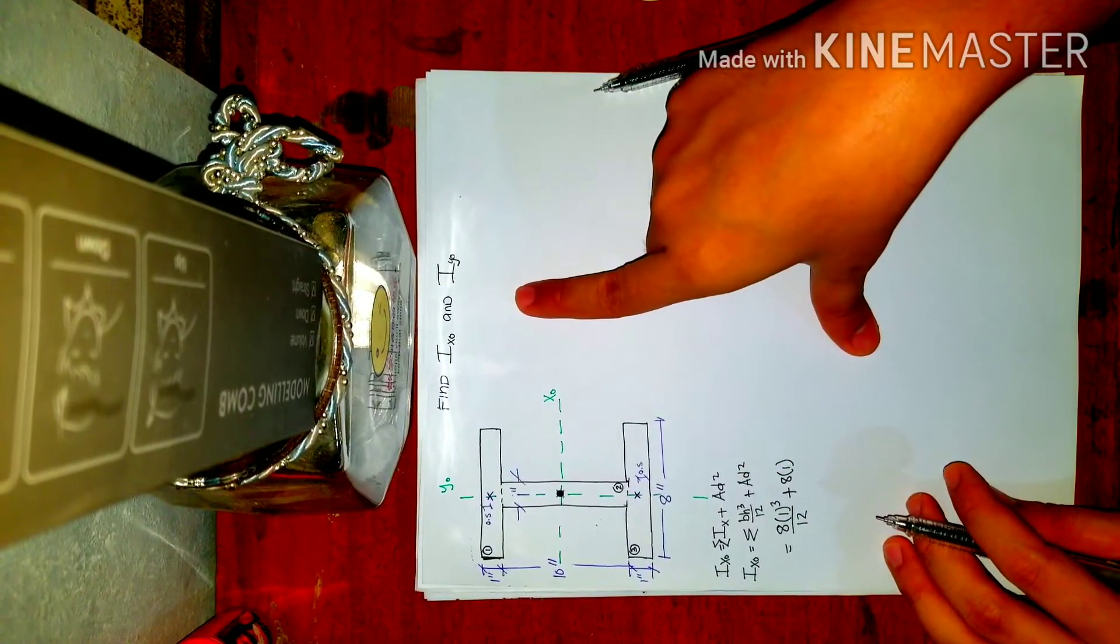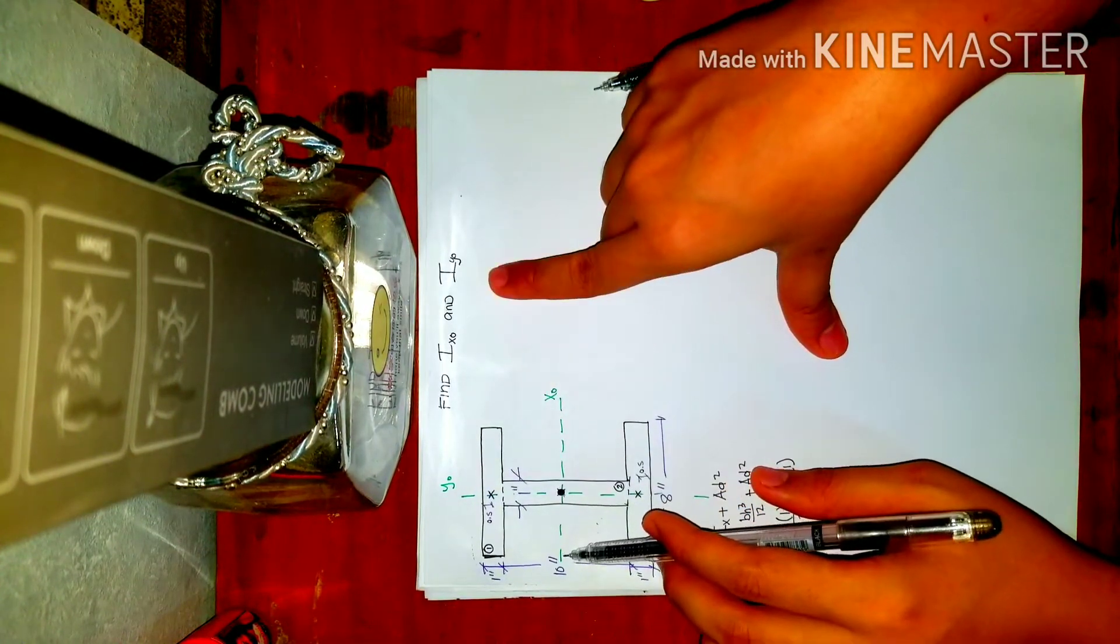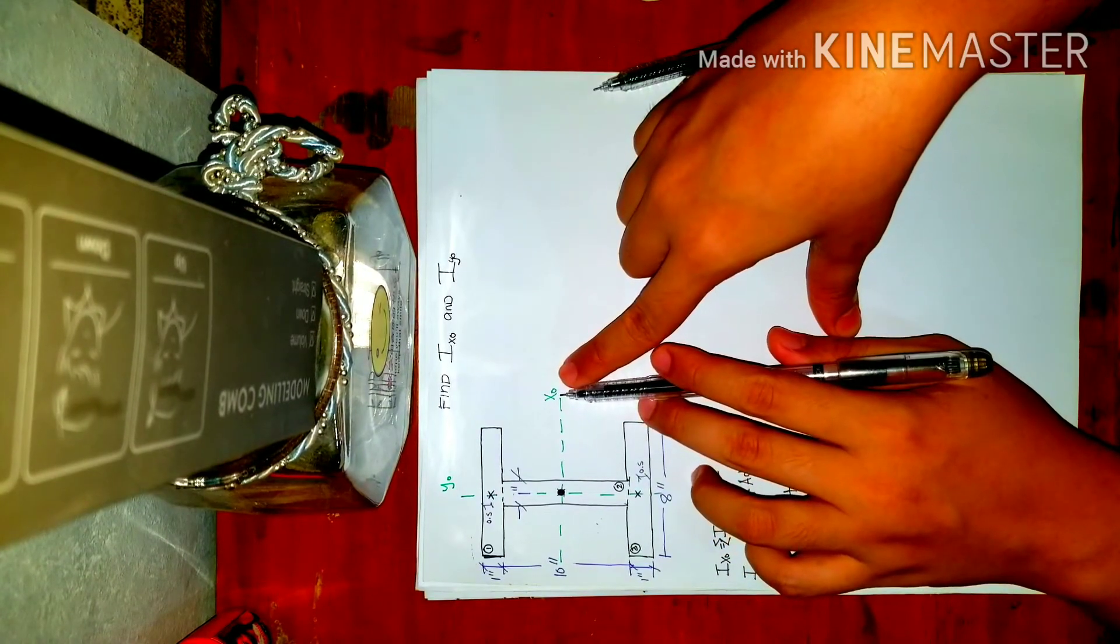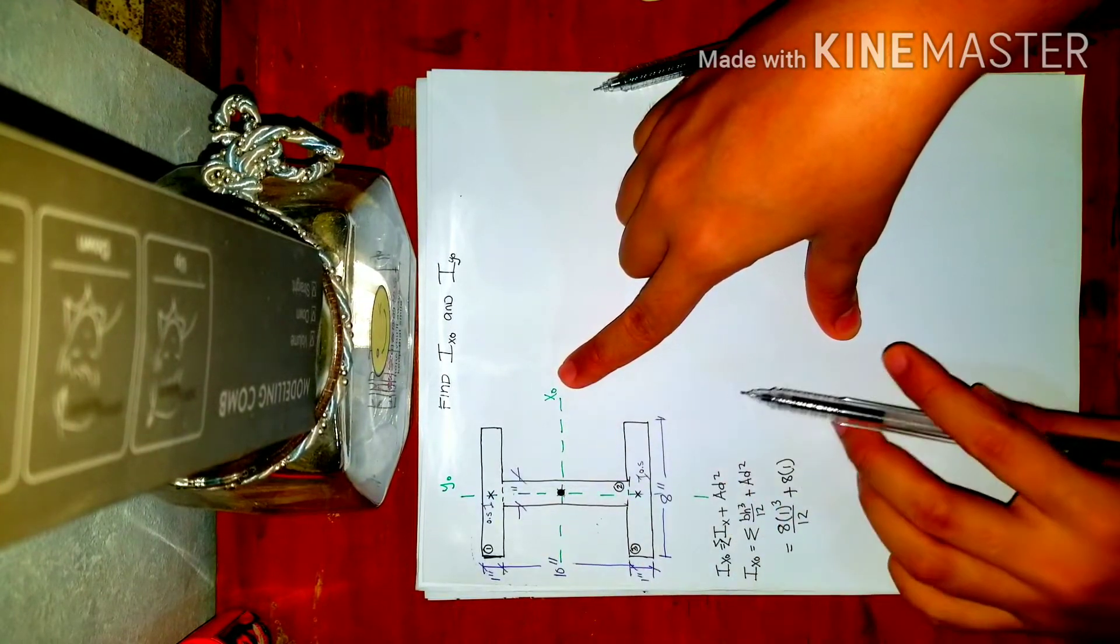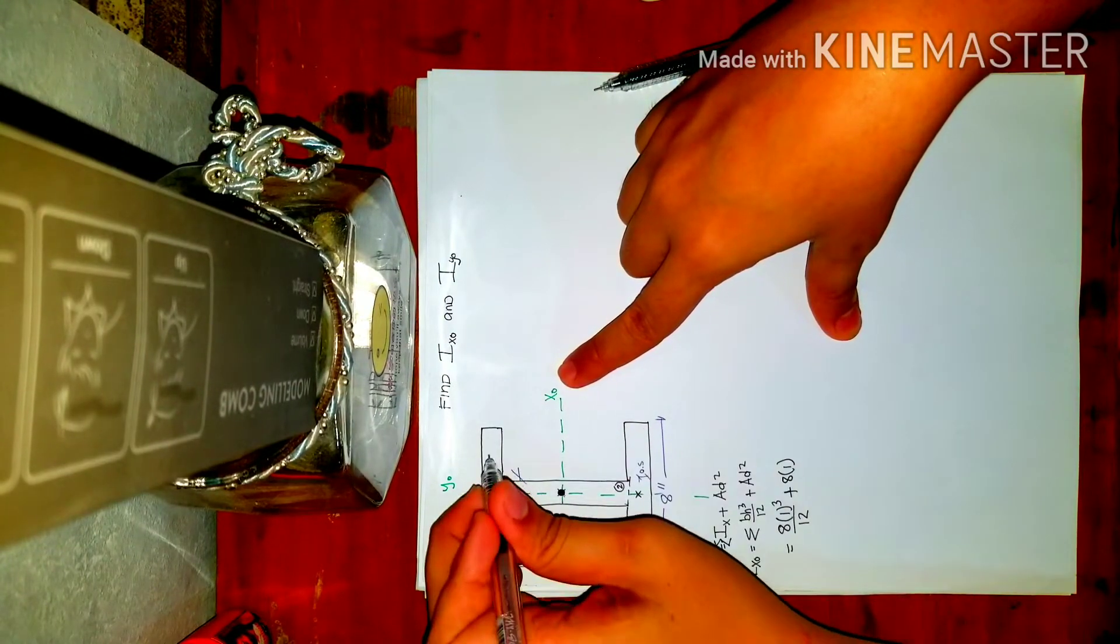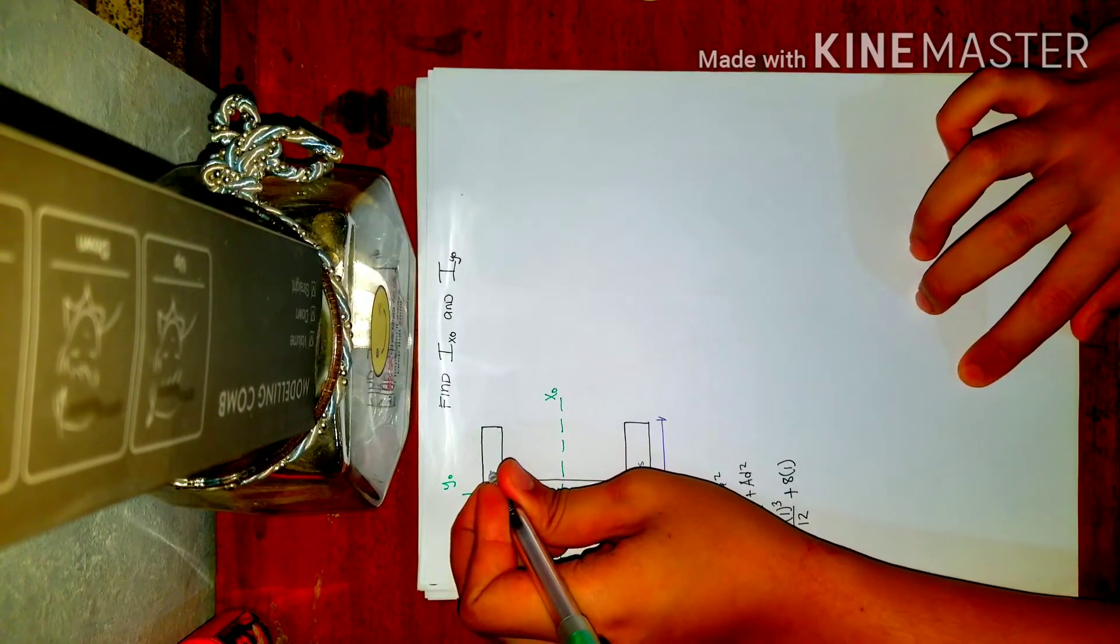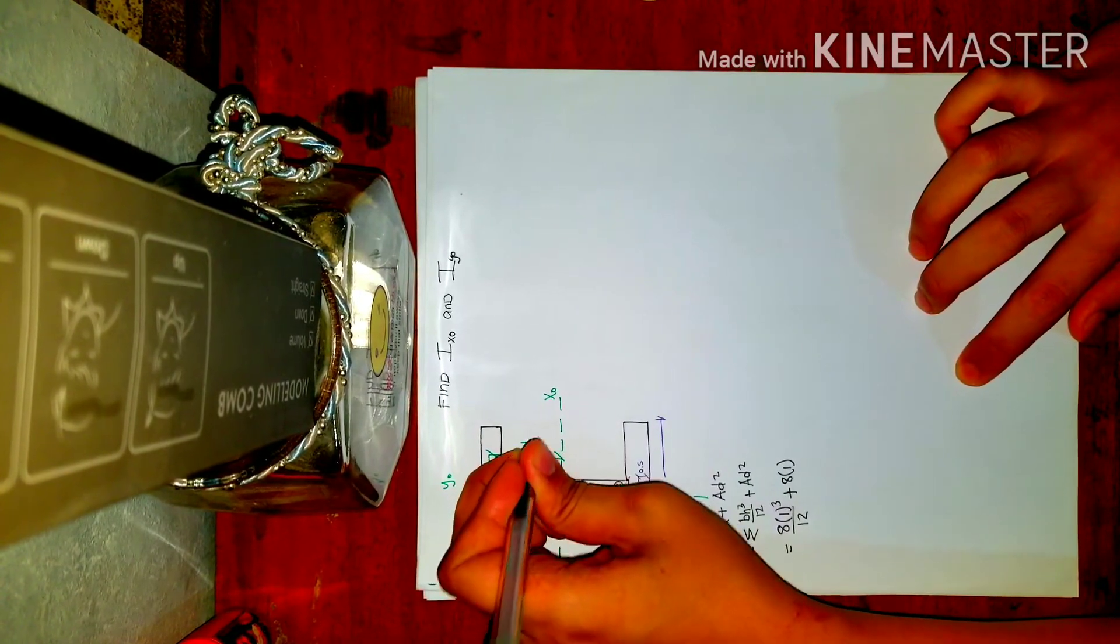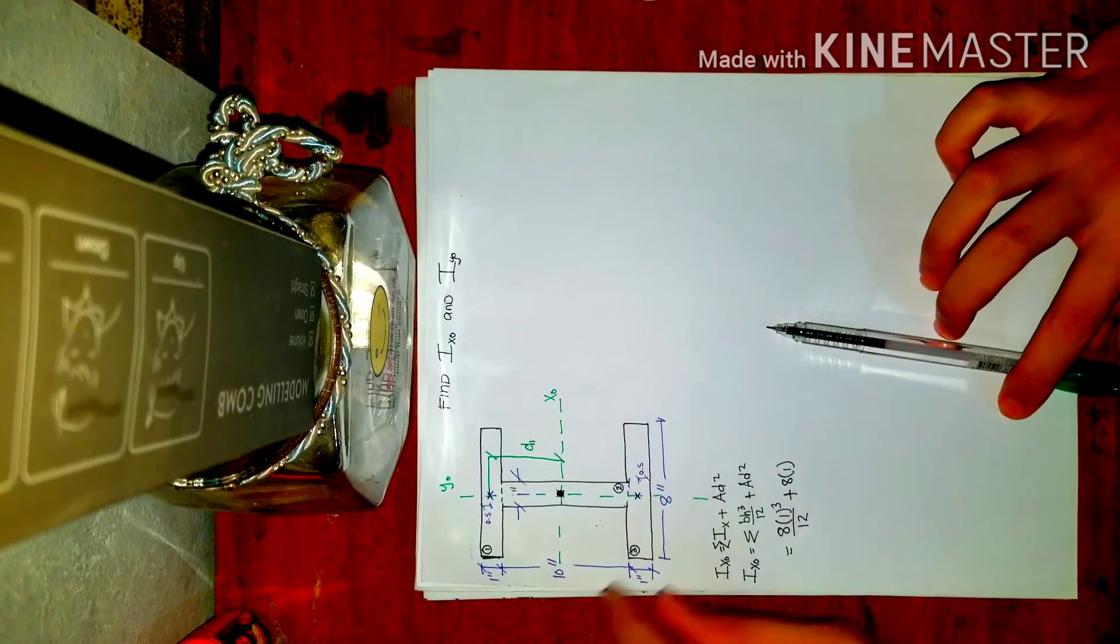And then the distance. So what is our definition of distance? That is the distance between the axis of the composite figure, the axis we're analyzing, which is the x-sub-o axis, multiplied by the centroid of the portion we're considering. So for this example, the first one, the distance we're considering is this. So let me project it here. So that is D1. Let's call it D1. So how do you get D1?